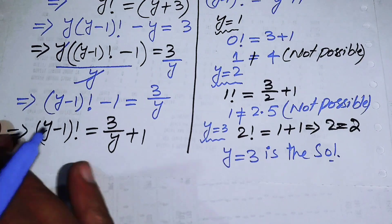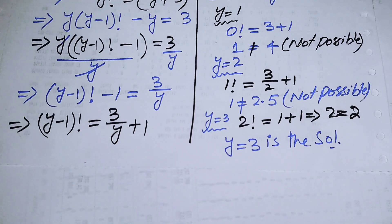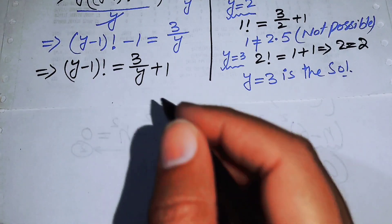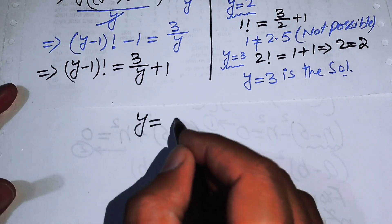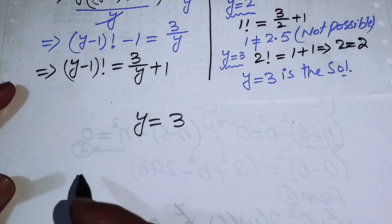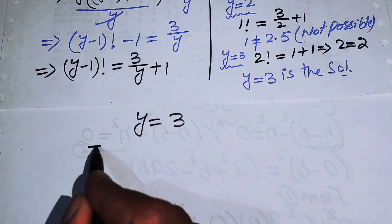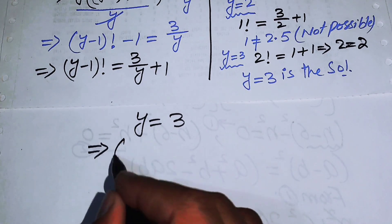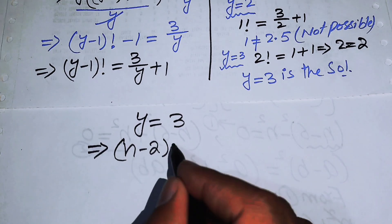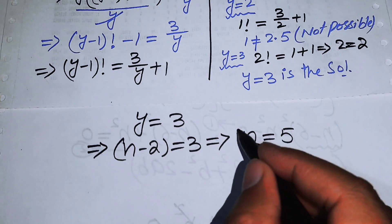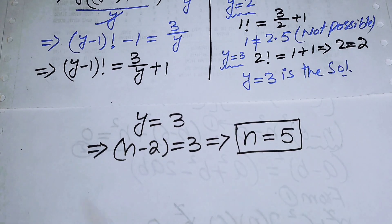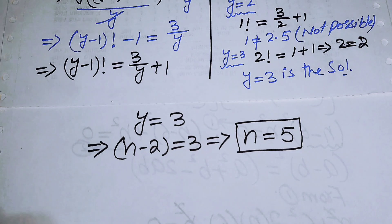We now back-substitute the value of y. Since we set y equals n minus 2 and y equals 3, we get n minus 2 equals 3, which implies n equals 5. Therefore n equals 5 is the only solution of this problem. Thank you so much for watching this video — please subscribe to my channel for more exciting videos.